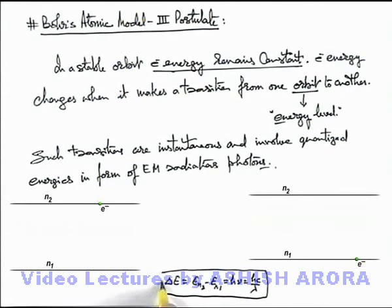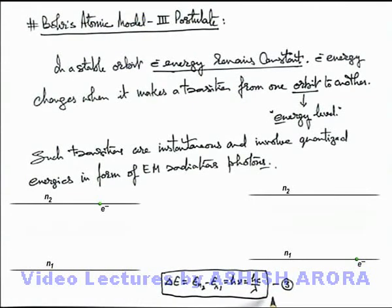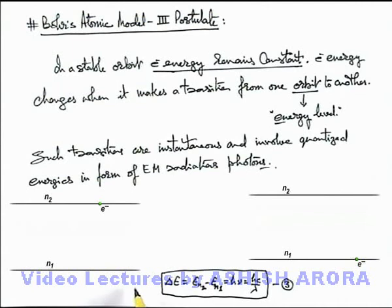This is the equation we use — equation number 3, explaining the third postulate of Bohr's atomic model. It explains that energy changes take place for an electron only when it makes a transition. When the electron makes a transition from a lower state to a higher state, it absorbs energy. When it makes a transition from a higher state to a lower state, it releases energy, both in the form of an electromagnetic radiation photon whose energy equals the energy difference of the 2 corresponding orbits.